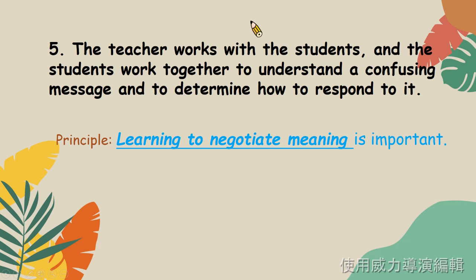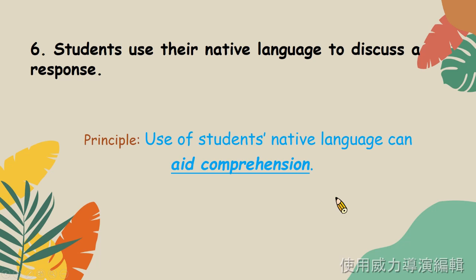Point 5: The teacher works with the students, and the students work together to understand a confusing message and to determine how to respond to it. Learning to negotiate meaning is important. 理所當然,在看到這些新詞的時候,學生需要旁人的協助好解釋出這些字詞的意思,老師也會下來幫忙。 當我們看到新字詞的時候,一群人一起合作是比較有效率的,而且誤出來的意思正確度是比較高的。 Point 6: Students use their native language to discuss the response. The use of students' native language can aid comprehension. 事實上用自己的母語來做解釋其實不是件壞事,以自己的母語作為輔助是為了理解意思和理解自己的同學在說什麼。